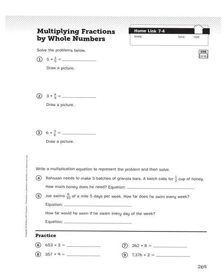The instructions for problems 1 through 3 ask us to solve the problems below by drawing a picture and then coming up with an answer product for our multiplication number sentences. Problem number 1, 5 times a fifth, looks very similar to the kinds of problems we did in the previous lesson when we were multiplying unit fractions. So let's look at problem number 2.